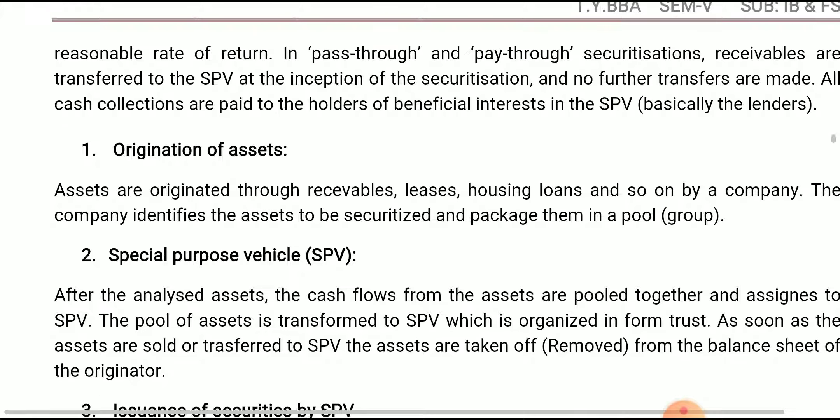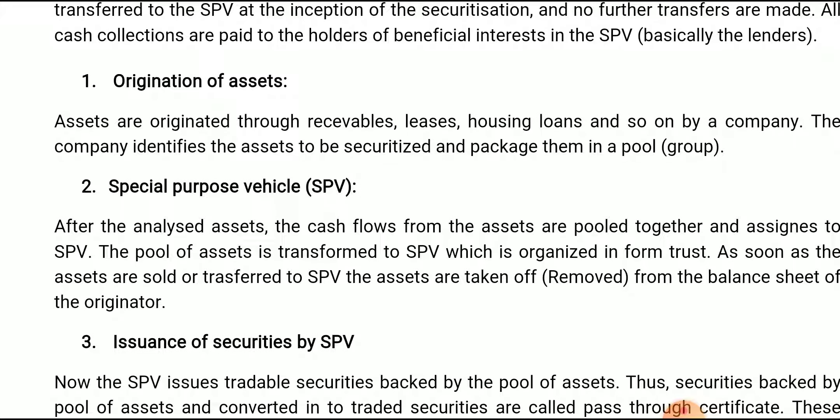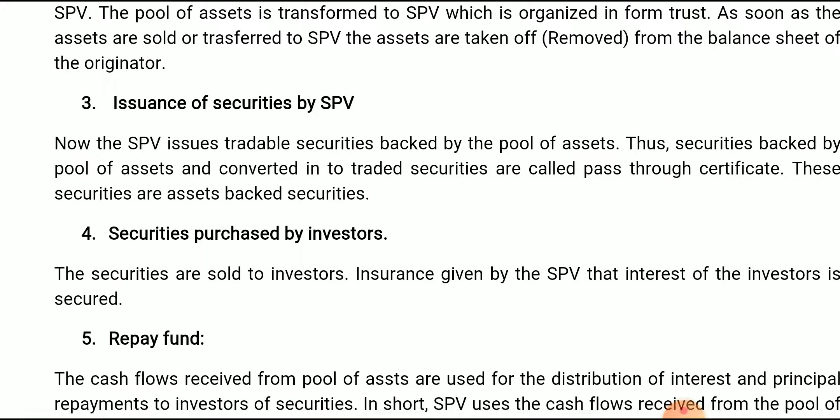The process begins with origination of assets: the bank first identifies the assets. If the borrower wants to take a loan from the bank, the borrower submits their mortgages — house documents, property documents — to the bank, and in return the bank provides the loan. When there are thousands of borrowers continuously increasing, the bank cannot easily provide loans. At that time, the bank has the mortgage pool. Due to a shortage of money, the bank sells this mortgage pool to the SPV, whose main purpose is to convert illiquid documents into liquid marketable securities.